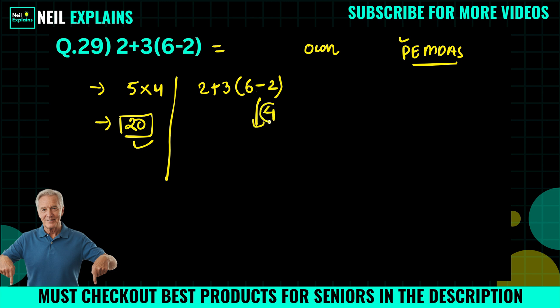We will get 4 as an answer. So we will rewrite our question here: 2 plus 3 times 4. Now, after parenthesis, next preference is given to multiplication. So we will operate this: 3 times 4, which equals 12.